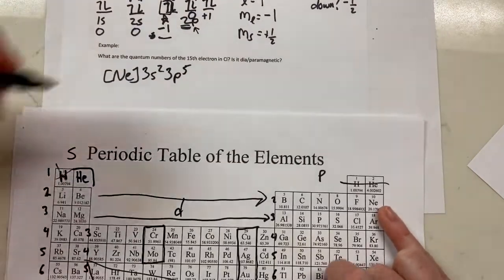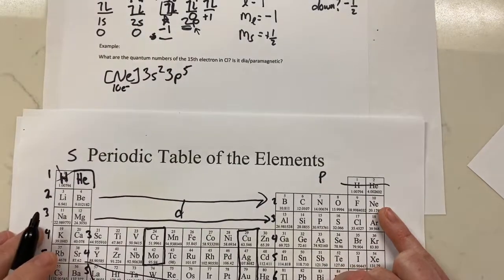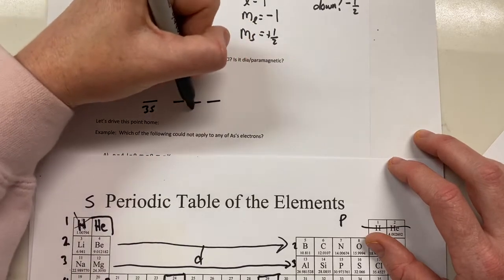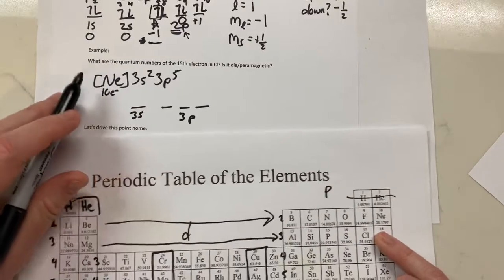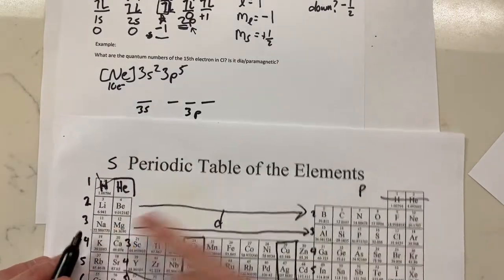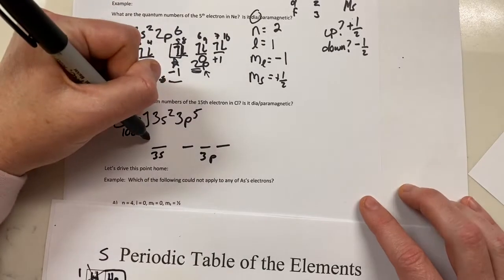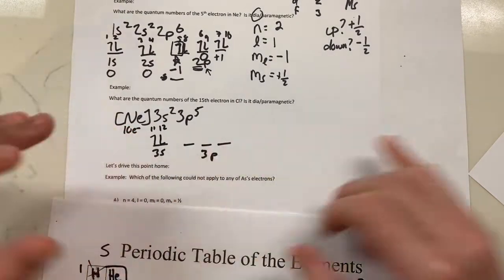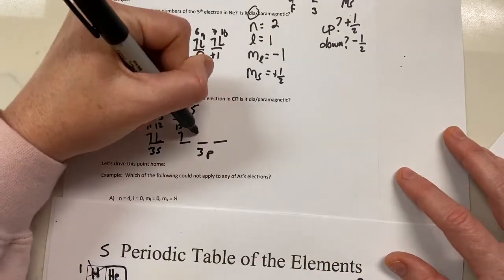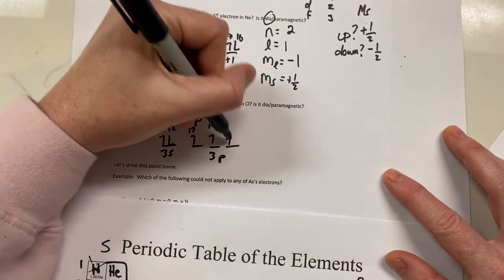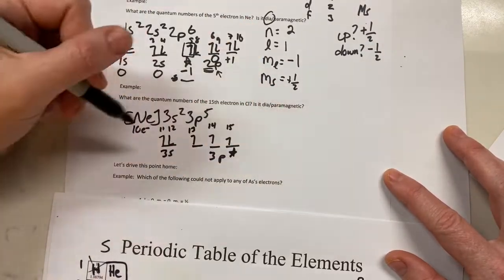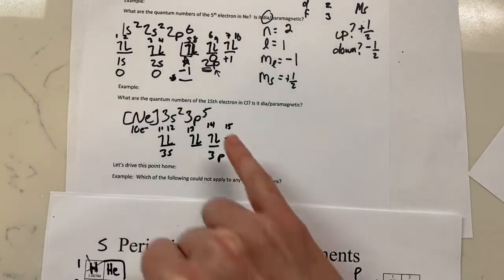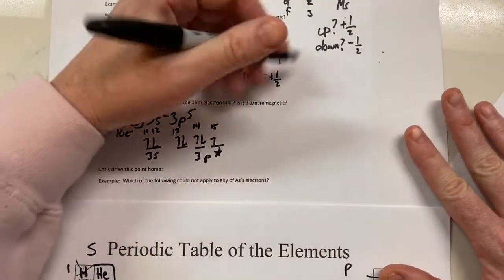If you remember, neon counts for the first 10 electrons. So when we do the 3s2 and the 3p5, neon counted for 10. To get to chlorine, the next one is going to be electron number 11, then down — 12. Then we get to the p, and you've got to spread them out: 13, 14, 15. This is the one we're looking for. Then you go back: 16, 17, because there are 17 electrons in chlorine.